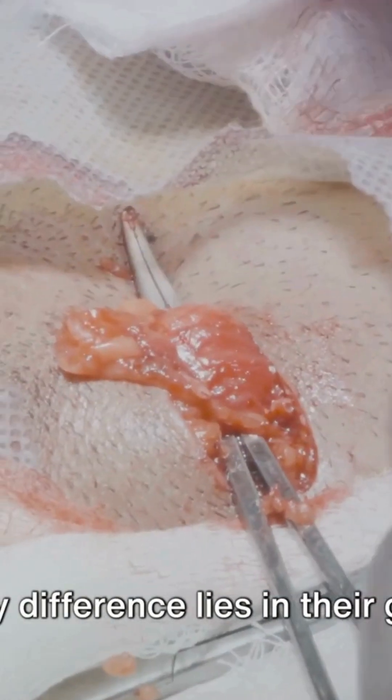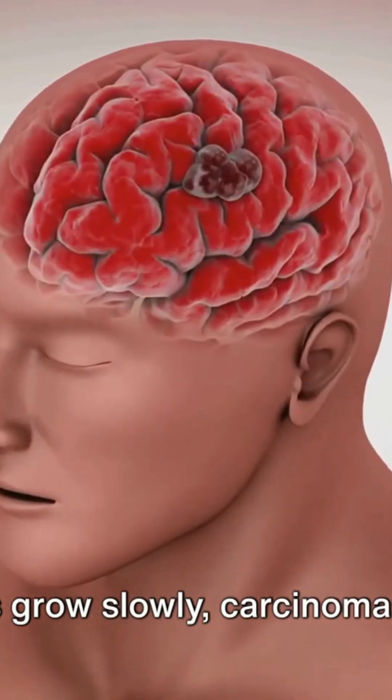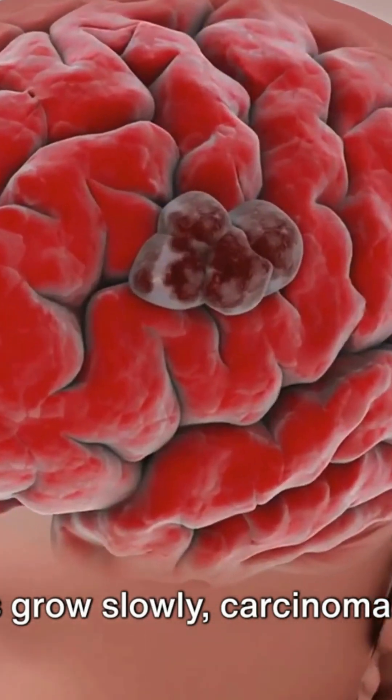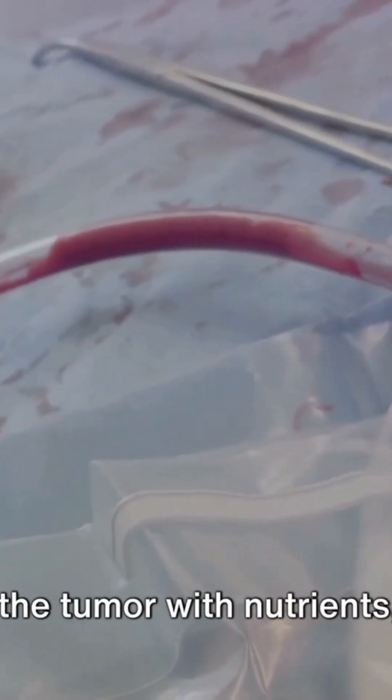Another key difference lies in their growth rate. While benign tumors grow slowly, carcinomas often grow quickly. This rapid growth can lead to the formation of new blood vessels to supply the tumor with nutrients.